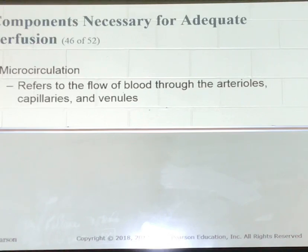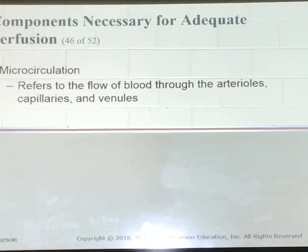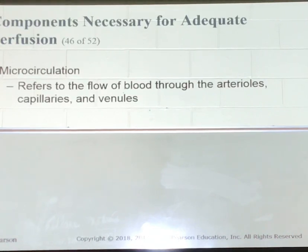The true capillaries are the site of exchange of nutrients, oxygen, carbon dioxide, glucose, waste products, and metabolic substances between the blood and the cells. Meta-arterioles are described as thoroughfares or channels that connect the arterioles and the venules.